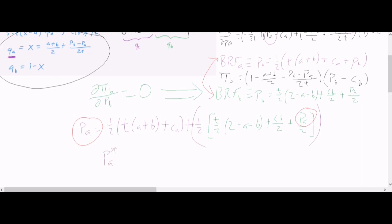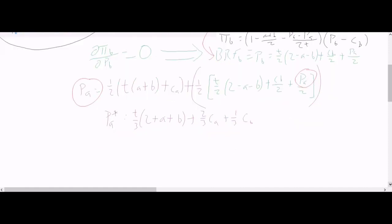That would be my equilibrium price for firm A. And it's going to equal T over 3 times 2 plus A plus B plus 2 thirds CA plus 1 third, which, there's also a simplification that often happens. A lot of times people will assume that the firms have symmetric production, CA equals CB equals C. In which case, our PA star would just be T over 3 times 2 plus A plus B, all of that plus C. And that's probably the one you're going to see more often, at least for most people who are watching this video.